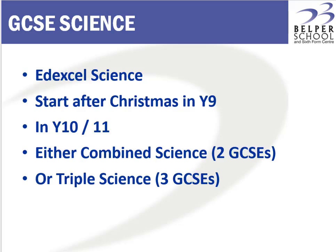If they choose to do the triple science, which is where one of their option choices is to study science, they will do some more biology, chemistry and physics units and they will end up with separate GCSEs in each of those subjects — so they'll end up with a biology, chemistry and physics GCSE.